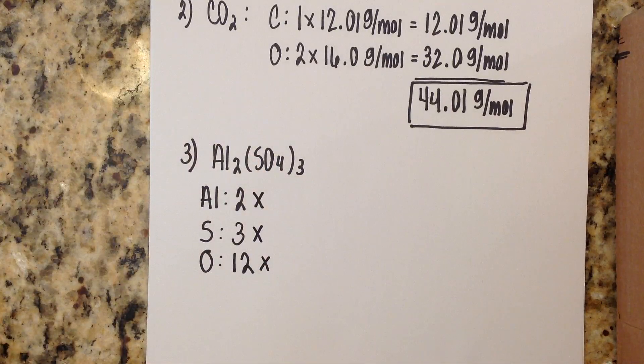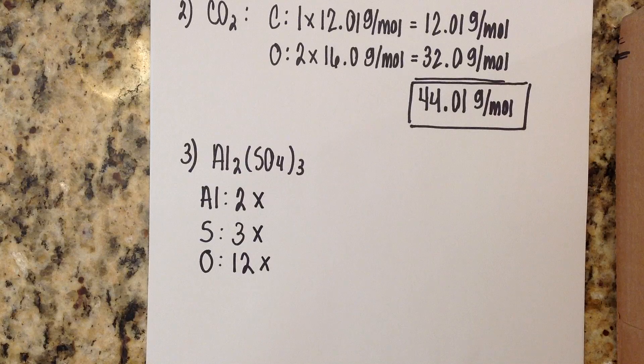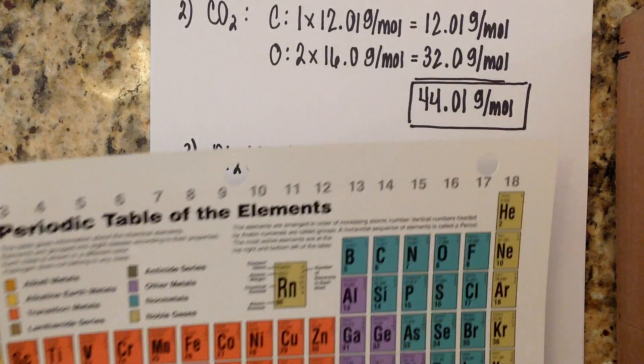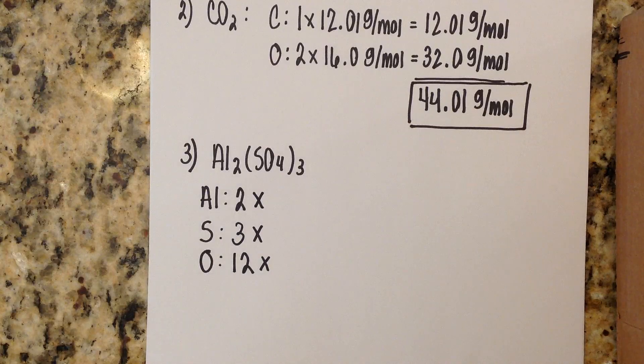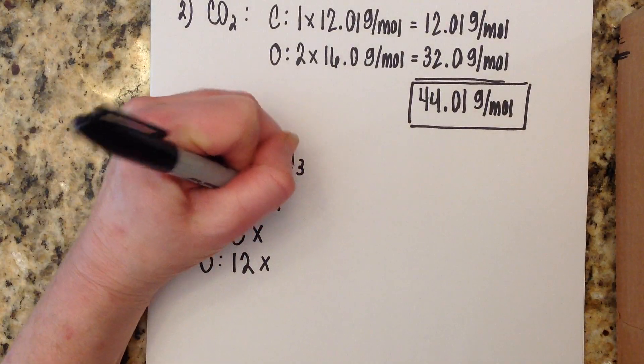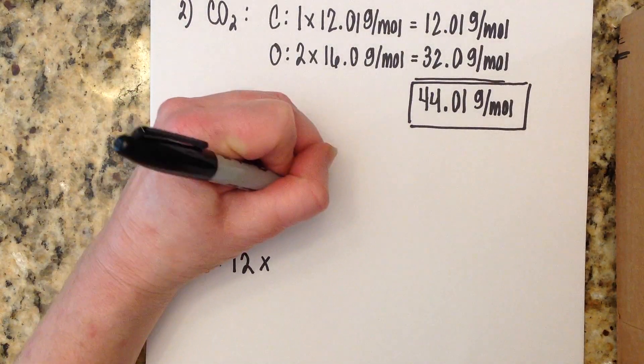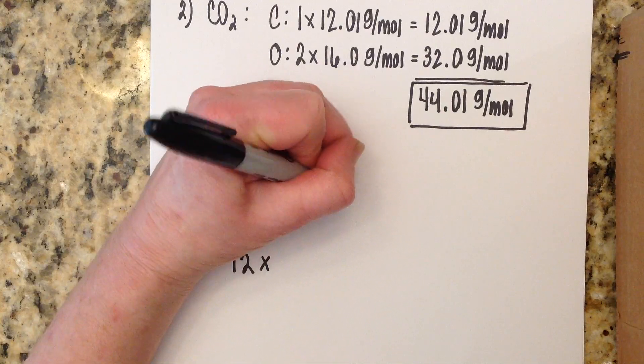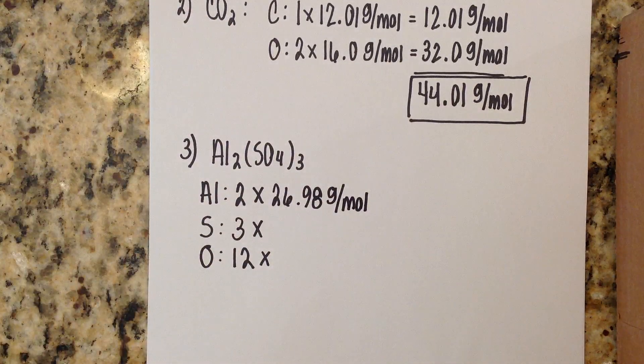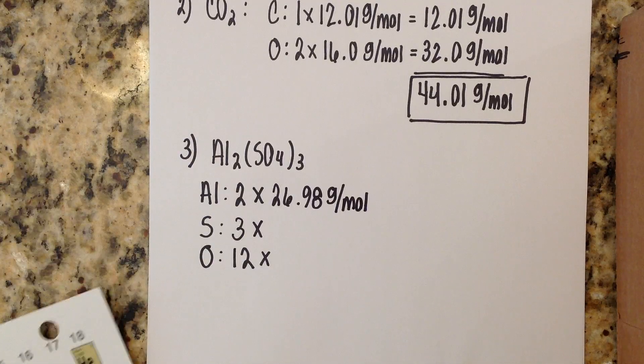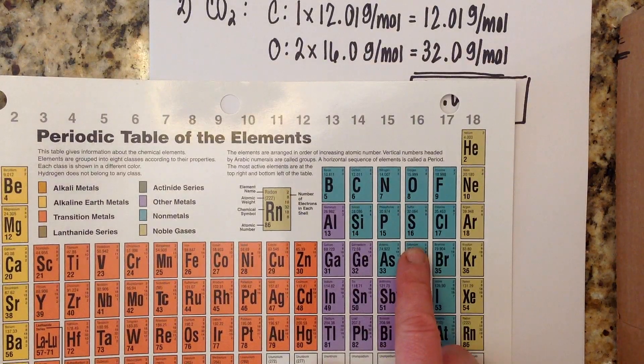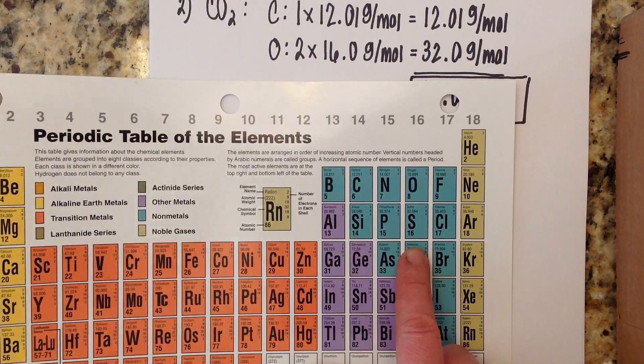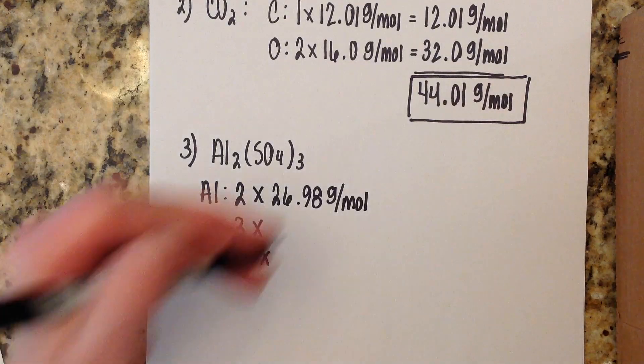Now we're going to look up our molar masses and we know that the molar mass of aluminum is 26.98 grams per mole. We know that the molar mass of sulfur - sulfur's over here with the non-metals - is going to be 32.07 grams per mole.